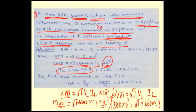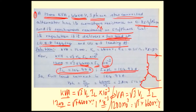In a star-connected alternator, line current equals phase current. So the calculated value of 104.97 A is also the phase current Ia. For phase voltage in a star connection: V-phase = V-line / √3 = 6600 / √3, which gives 3810.5 volts. So far we have calculated the full load current and phase voltage.